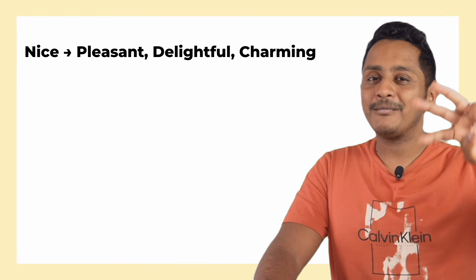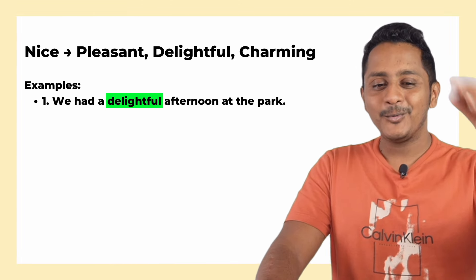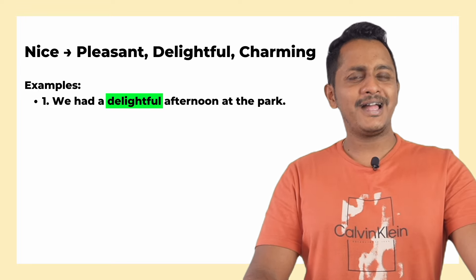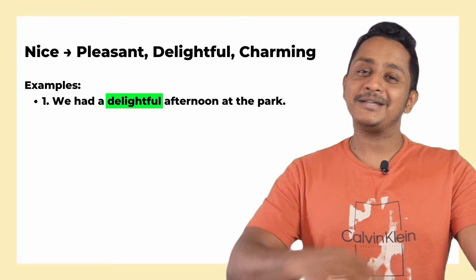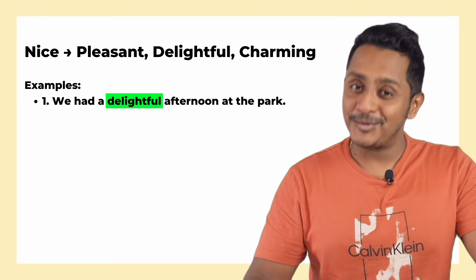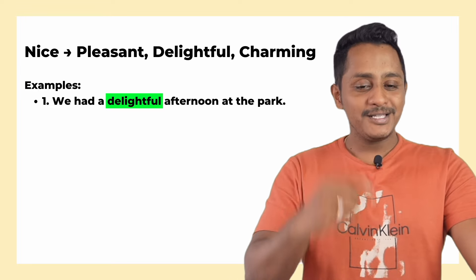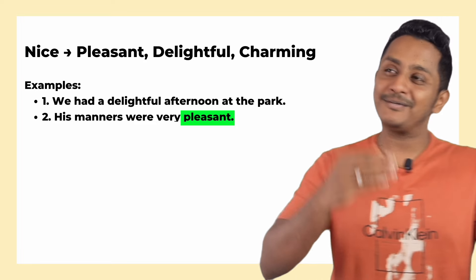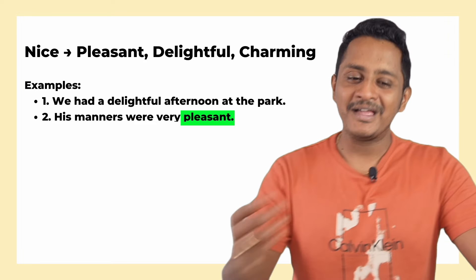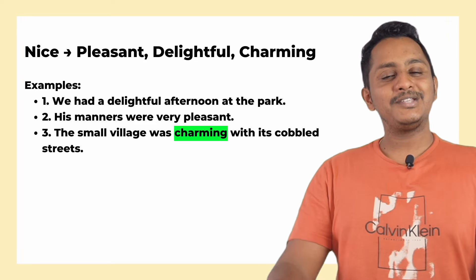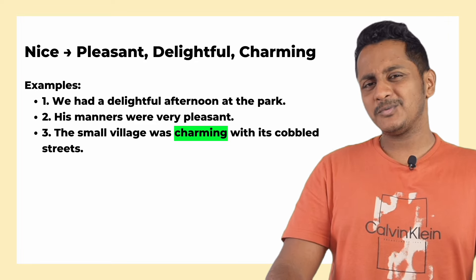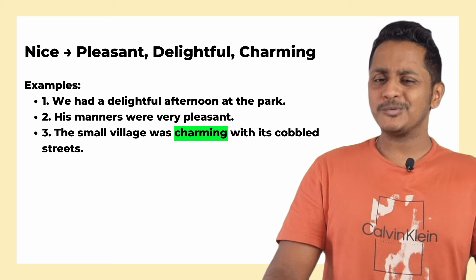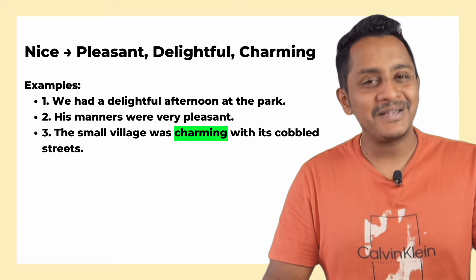The next word is 'nice.' Instead of 'nice,' use pleasant, delightful, or charming. For example, instead of 'we had a nice afternoon at the park,' say 'we had a delightful afternoon at the park.' Instead of 'his manners were very nice,' say 'his manners were very pleasant.' Instead of 'the small village was nice with its cobbled streets,' say 'the small village was charming with its cobbled streets.'